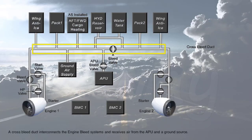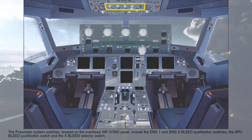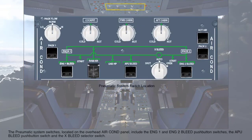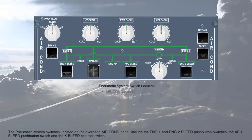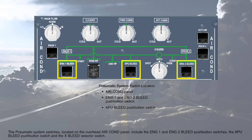A cross-bleed duct interconnects the engine bleed systems and receives air from the APU and a ground source. The pneumatic system switches, located on the overhead air conditioning panel, include the engine 1 and engine 2 bleed push-button switches, the APU bleed push-button switch, and the cross-bleed selector switch.